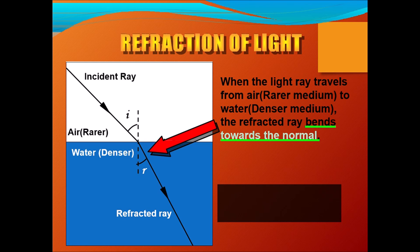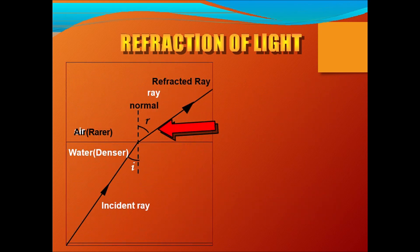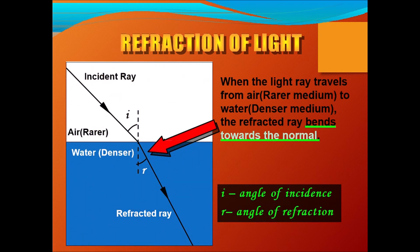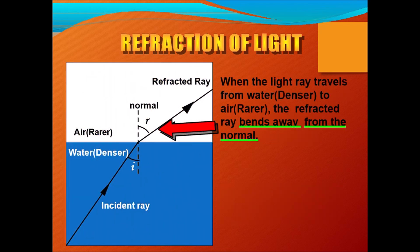When a ray of light comes from a rarer medium to a denser medium, it bends towards the normal — so i is the angle of incidence and r is the angle of refraction. Now, when the ray of light passes from a denser medium to a rarer medium — for example from water to air — you can see it is bending away from the normal. The angle r is greater here than in the previous case.